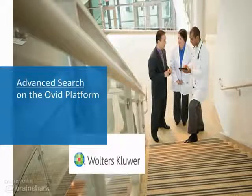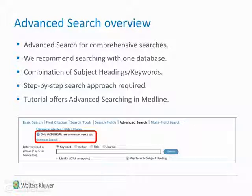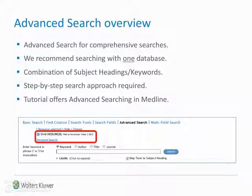Welcome to this presentation where we discuss the advanced search on the Ovid platform. In this tutorial we will look at the following areas and provide a video demonstration of the advanced search mode. The advanced search mode is the preferred option for conducting a comprehensive and well-defined search. Searching one database at a time is strongly recommended. Advanced search uses a combination of subject headings and keywords, and a structured step-by-step approach is used, which is very different to the quick search in the basic search mode.